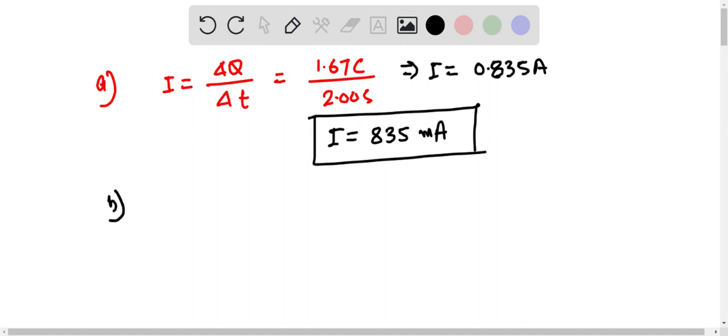Now part b: for the same current, the charge delta Q equals the current times the time t, or that equals 0.835 amperes times the time duration of 5 seconds, so the amount of charge flown equals 4.175 coulombs.